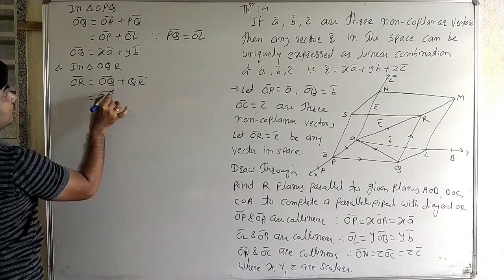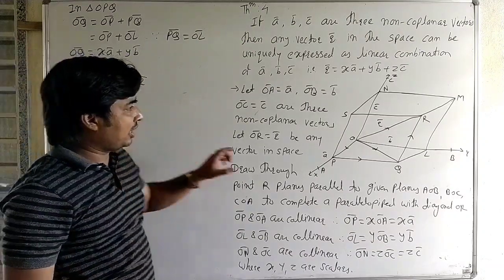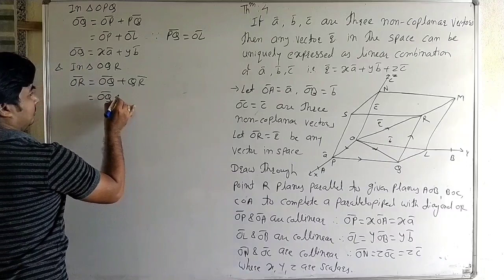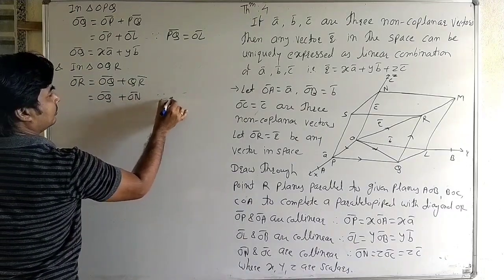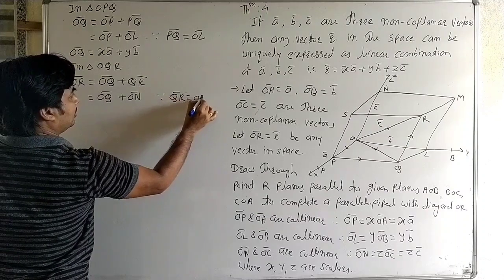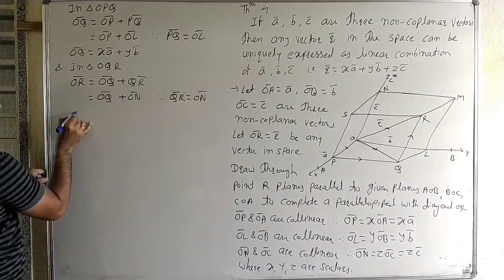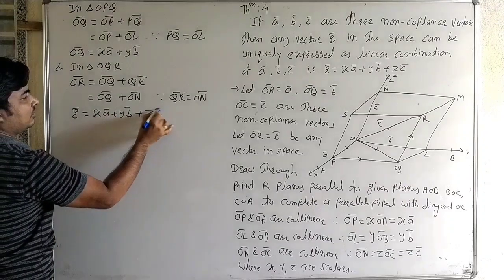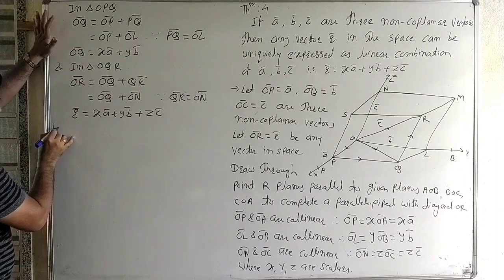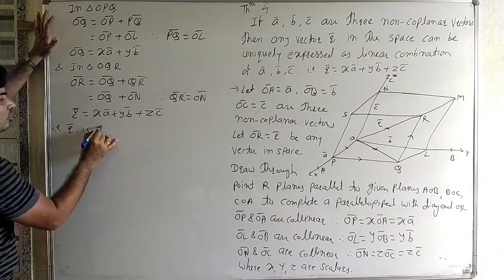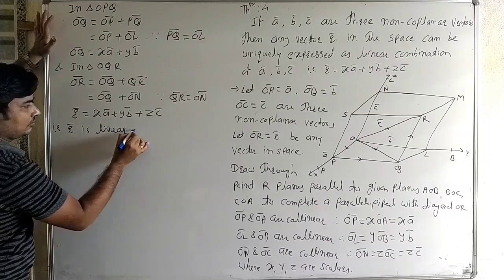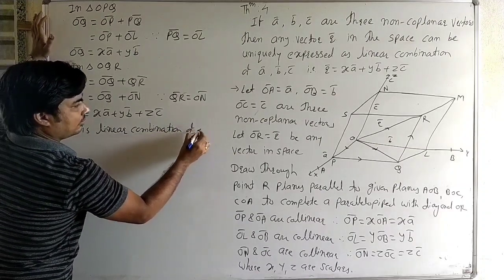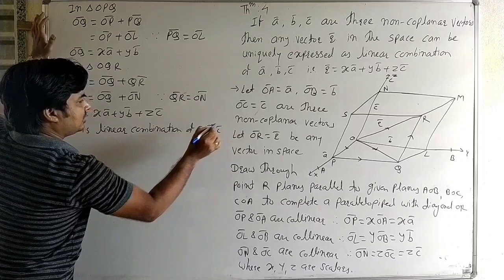OQ equals X·a-bar plus Y·b-bar. And QR equals ON, that is vector ON equals Z·c-bar. Therefore r-bar equals X·a-bar plus Y·b-bar plus Z·c-bar. That is, r-bar is a linear combination of a-bar, b-bar, and c-bar.